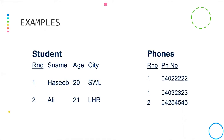One is Haseeb, registration number 1. Haseeb has two phone numbers: 040-222-222 and 040-322-323. After that, Ali has only one phone number.